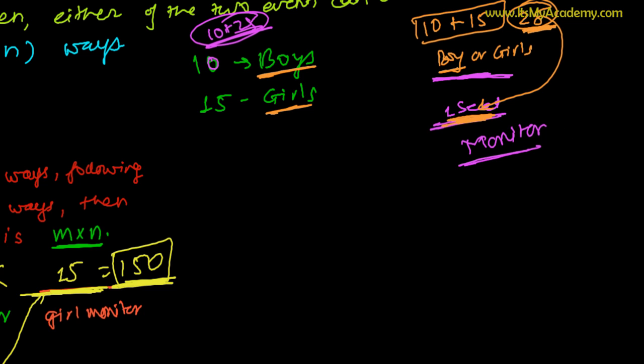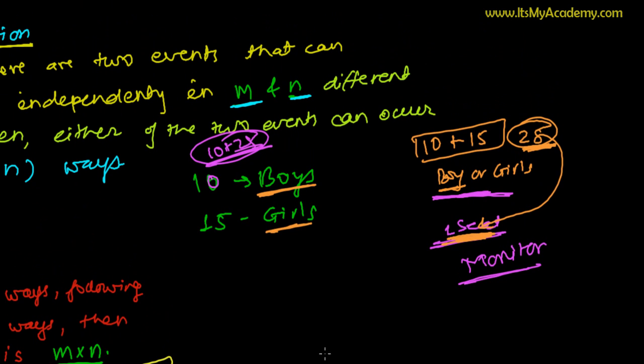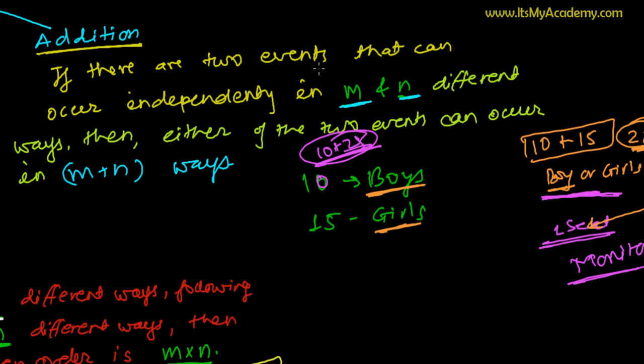So this is the fundamental principle of addition. If there are two events that can occur independently in M and N different ways - just like here, we can select one boy out of 10 independently in 10 different ways, and we can select one girl out of 15 independently in 15 ways - then either of the two events can occur in M plus N ways.